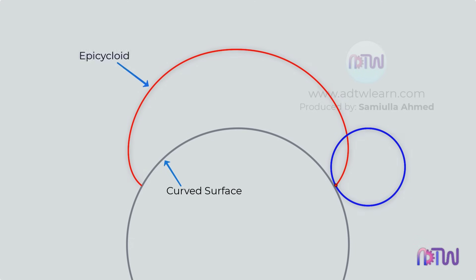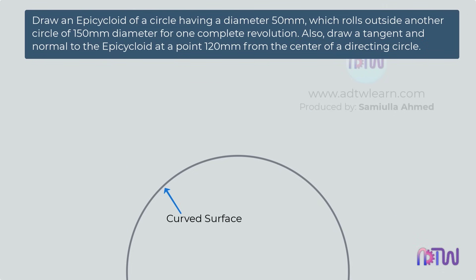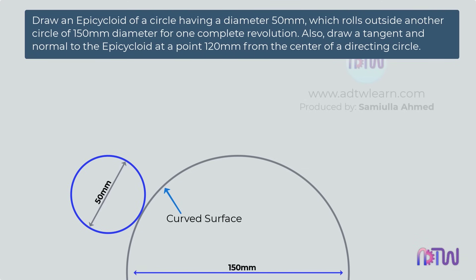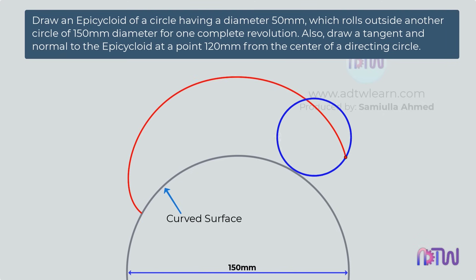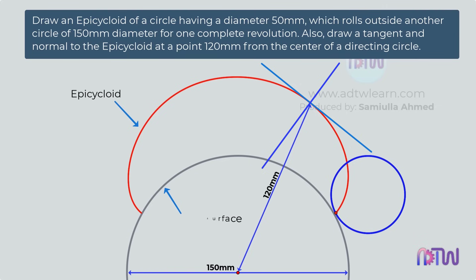In this video, we will see how to draw this epicycloid. Here are the instructions: draw an epicycloid of a circle of diameter 50 mm, which rolls outside another circle of 150 mm diameter for one complete revolution. Also, draw a tangent and a normal on this epicycloid at 120 mm from the center of the directing circle.